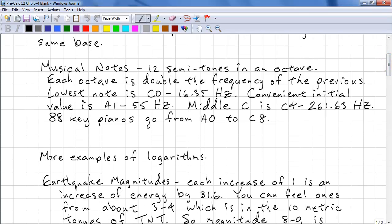One example of logarithms is musical notes. There's 12 semitones in an octave. Each octave is double the frequency of the previous octave. The lowest note that we have is C0, which is 16.35 Hz. That's a decimal value, so it's not too convenient. A more convenient initial value to use is A1, which is 55 Hz. Middle C is C4, so that's in the fifth octave, and the frequency is 261.63 Hz. A full piano has 88 keys, so it goes from A0 to C8.